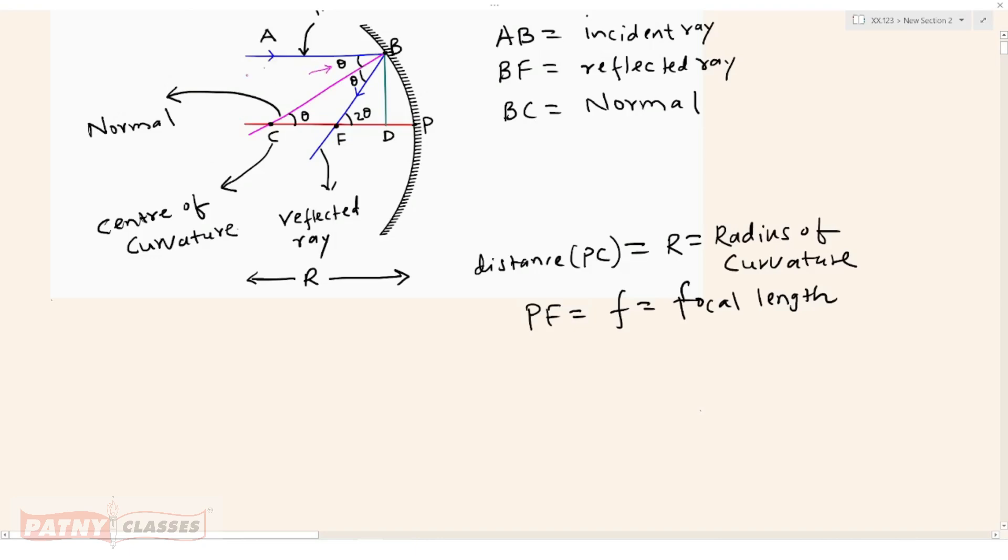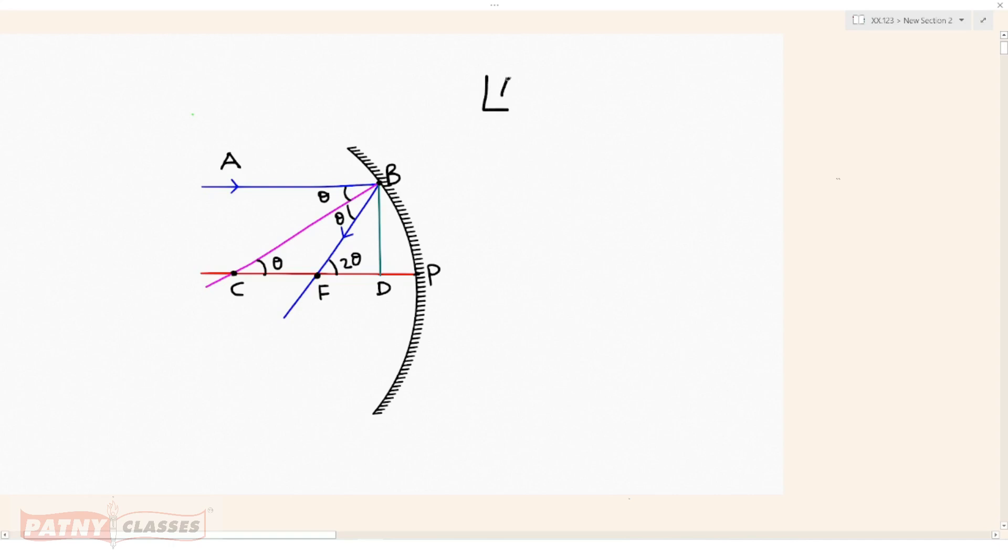This angle is the angle of incidence and this is the angle of reflection. The angle of incidence is theta and the angle of reflection is also theta. That is angle ABC equals theta and angle CBF equals theta because of the law of reflection, angle of incidence equals angle of reflection.